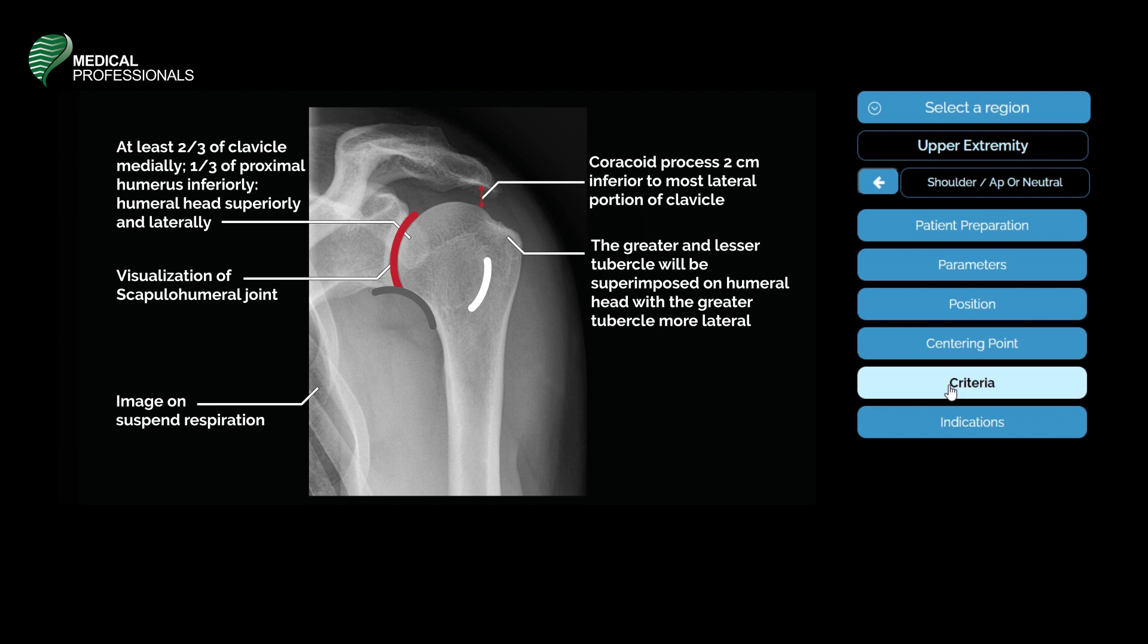The humeral head superiorly and laterally should be visualized. A clear visualization of the scapulohumeral joint. The greater and lesser tubercle will be superimposed on the humeral head with the greater tubercle more lateral.